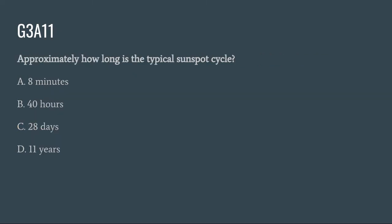G3A11: Approximately how long is the typical sunspot cycle? A. Eight minutes. B. Forty hours. C. Twenty-eight days. Or D. Eleven years. The correct answer is D: eleven years.